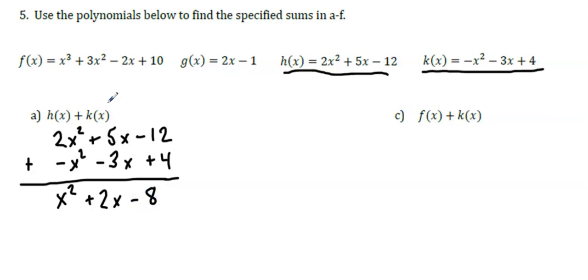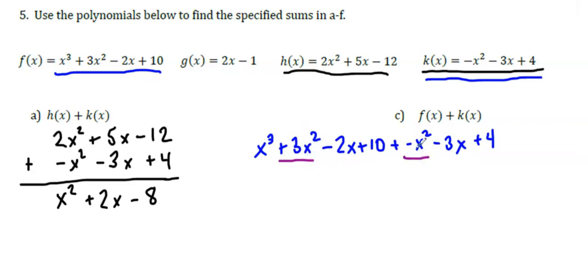For c, I'm going to add f(x) + k(x). This time, I'm going to use a strategy where I list the polynomials beside each other. Now I want to find like terms. So 3x² and -x² are like terms because they both have x². -2x and -3x are like terms because they both just have an x. And then the constants +10 and +4 are like terms.